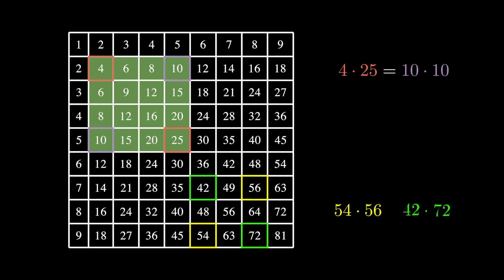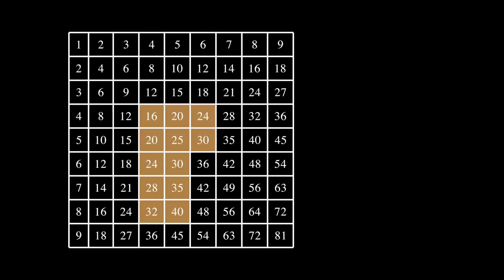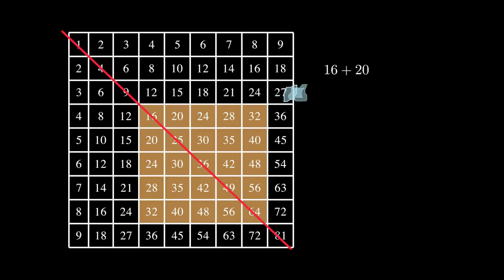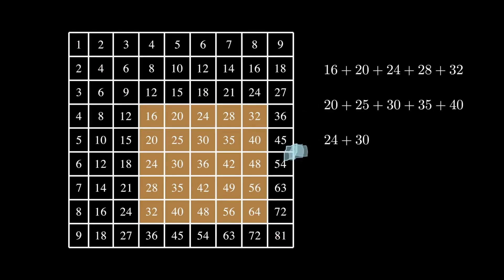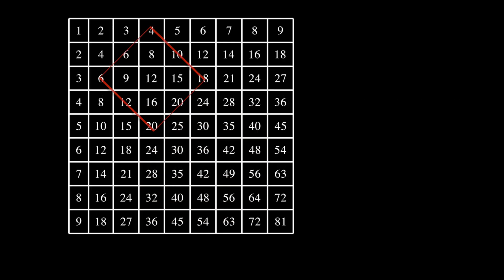If such a square happens to be symmetric in the main diagonal, the sum of all elements is itself a perfect square. For squares with sides parallel to diagonals, not products but the sums of diagonal elements are equal.